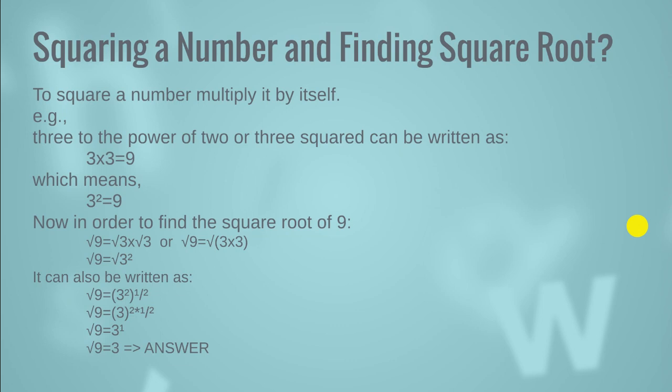To square a number, multiply it by itself — for example, 3 to the power of 2, or 3 squared, equals 9. Now, to find the square root of 9, we first find the factors of 9: 3 multiplied by 3 gives us 9, so 3 and 3 are the factors. We write these factors inside the square root — also called the under root. Since 3 times 3 equals 9, we write it as the square root of 3 squared.